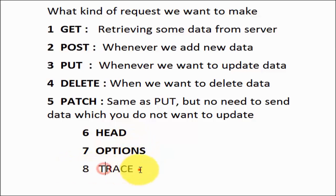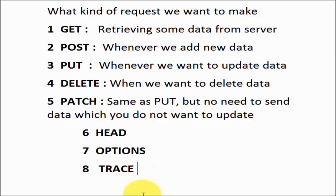Last is TRACE. TRACE means I want to check what the format of my request is. Whenever we hit a request, we may not know what header or body content we are sending to the server. TRACE echoes back whatever we send — the same header and the same body — so we can inspect what our request header and body were. It is used for debugging purposes only.